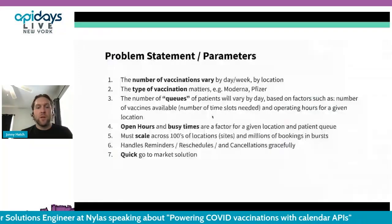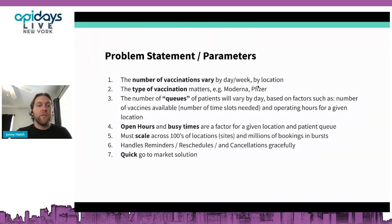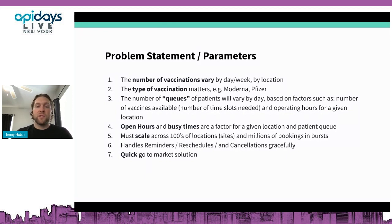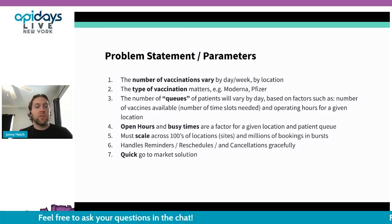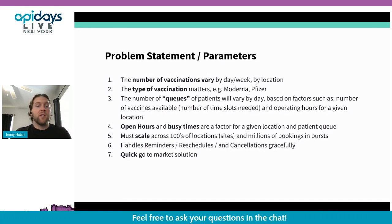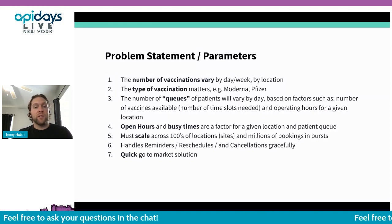I want to jump into the problem statement and the parameters we had to deal with. A customer came to us saying they had tried a few different scheduling solutions but their use case was so complex they couldn't find something flexible enough to work right out of the box. We had a tight timeline to come up with a solution within a week. The number of vaccinations at a single location could vary a lot based on who could sign up, where you're at, and how many people were available to distribute doses. There was also the type of vaccination — if you were coming in for your second shot of Moderna or Pfizer, you needed to ensure you got the matching second dose.